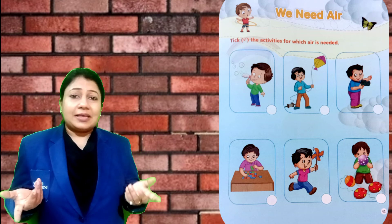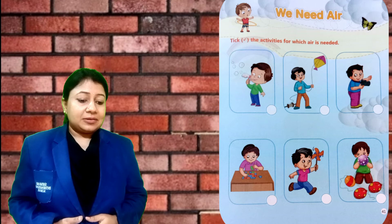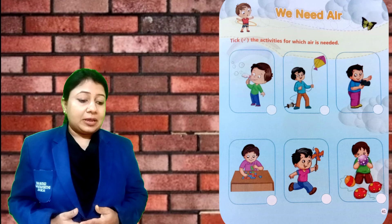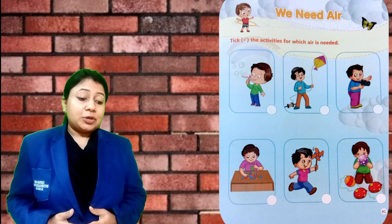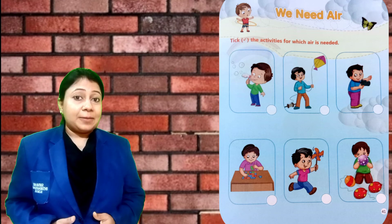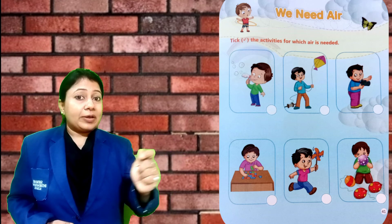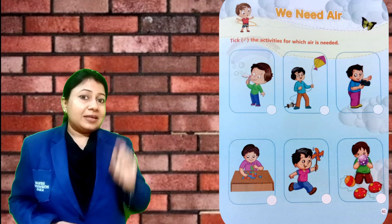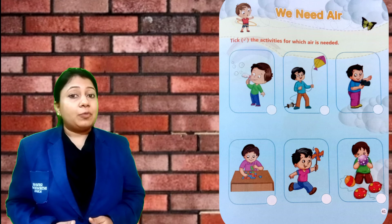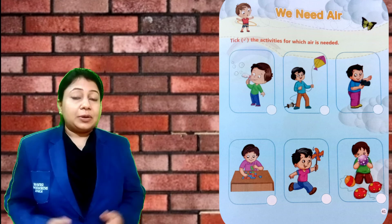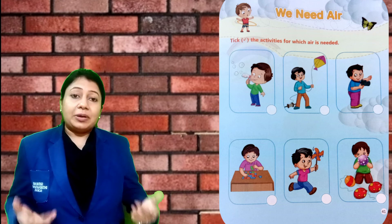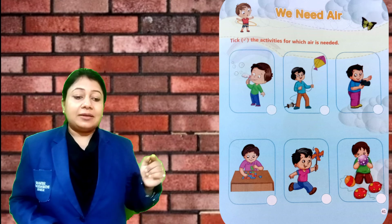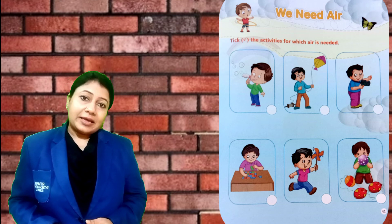Next picture — that activity does not need air. Next — a child is playing a game. That game also does not need air. Next picture — the child is playing with a toy, and that toy needs air. Next — balloon. The child is filling air in a balloon. That activity also needs air. So tick those activities which require air.